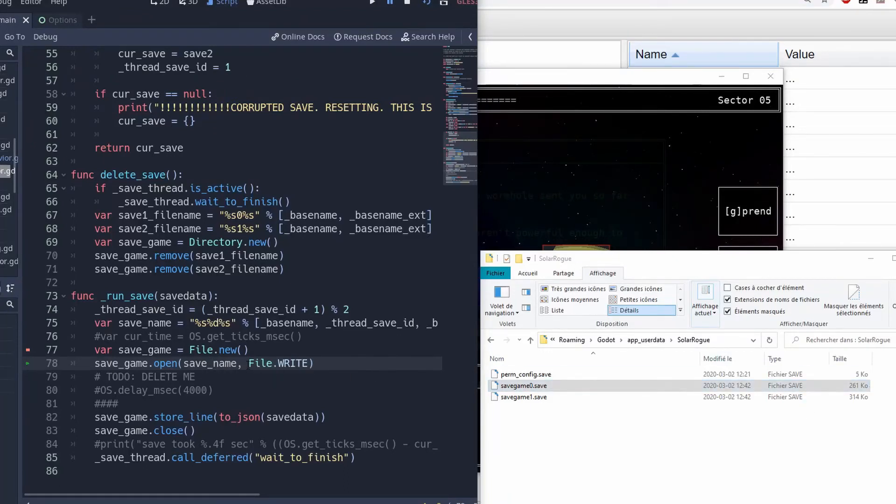But if something happened while you're writing the file, so for example if the player quits the game or if you crash or something like that, then your file will remain empty which means you're gonna end up with a corrupted save.